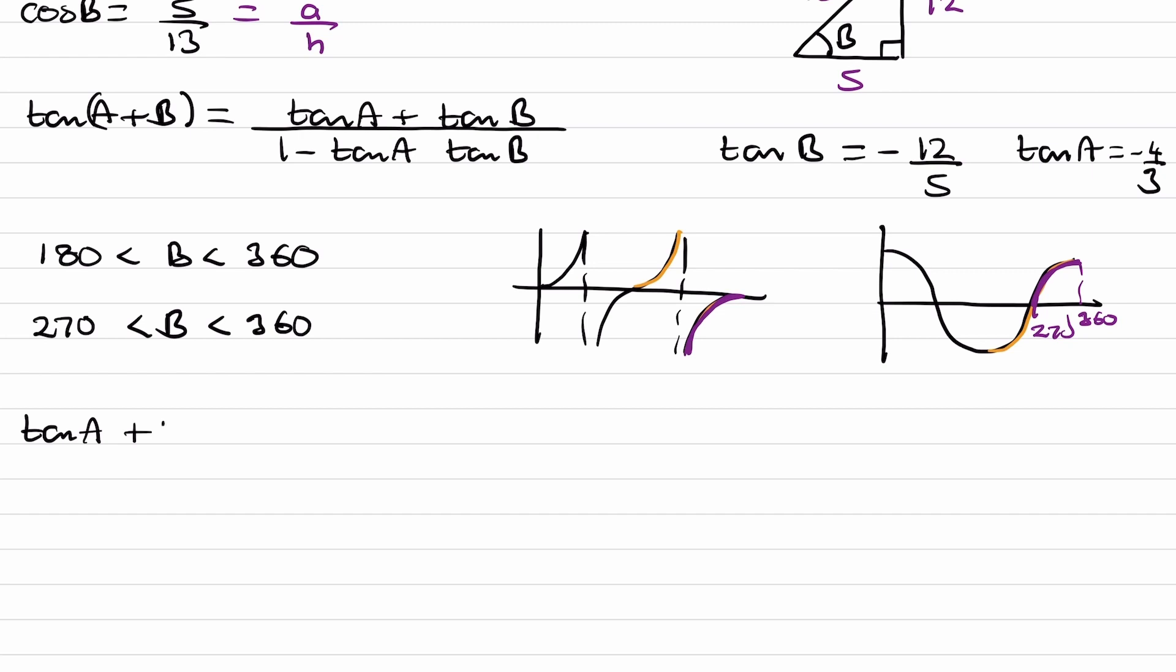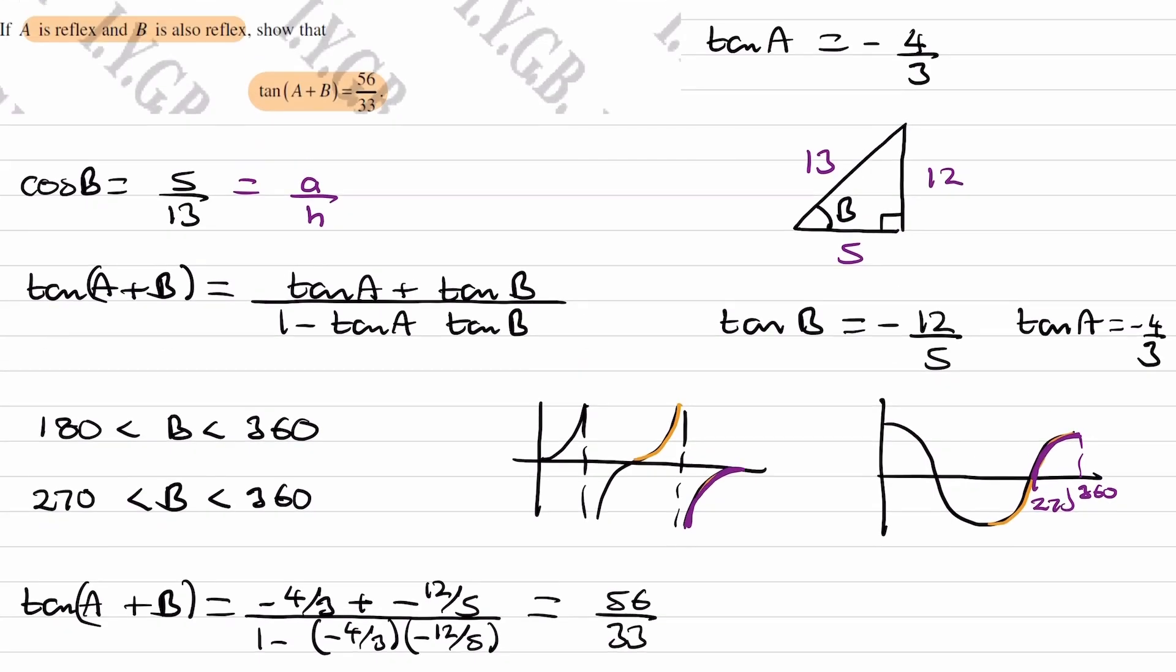And then tan(A + B) is tan A plus tan B all over 1 minus tan A tan B. Type this into the calculator, and you end up with 56 over 33, which is our answer.